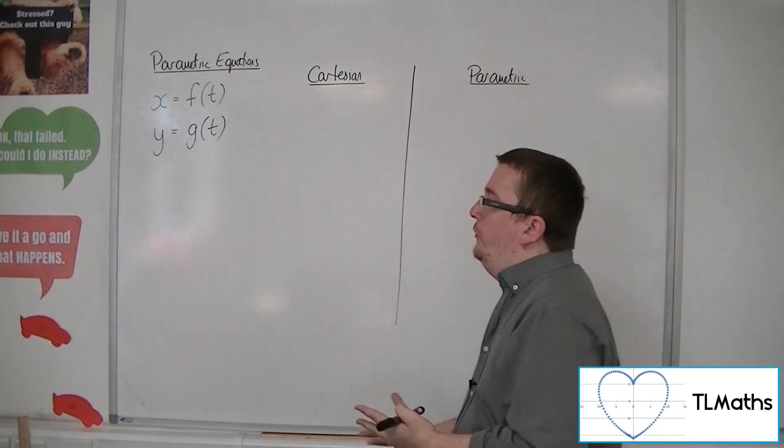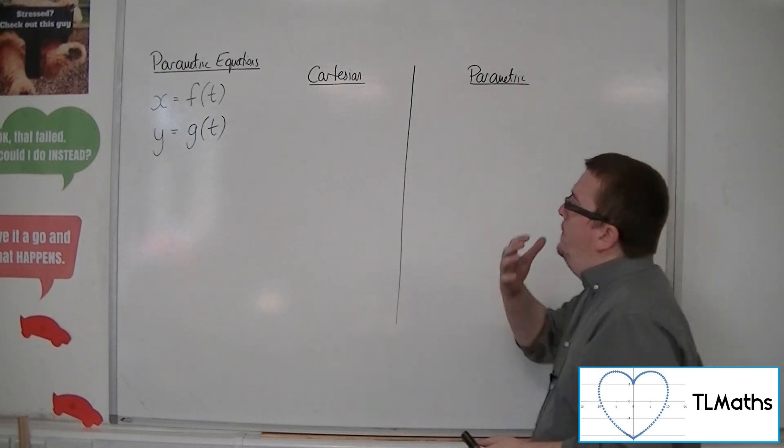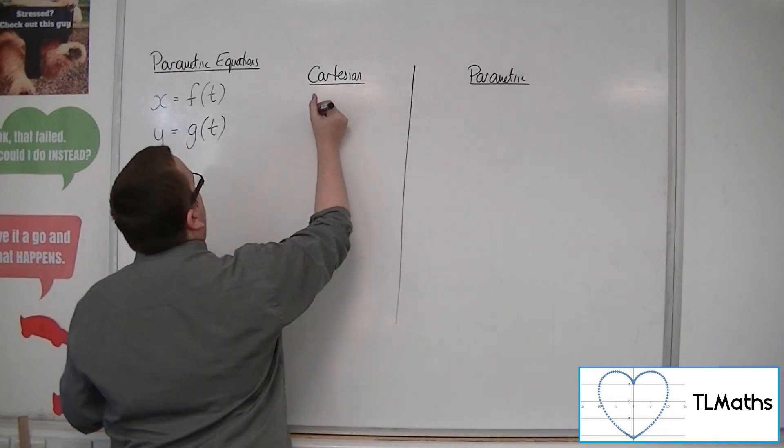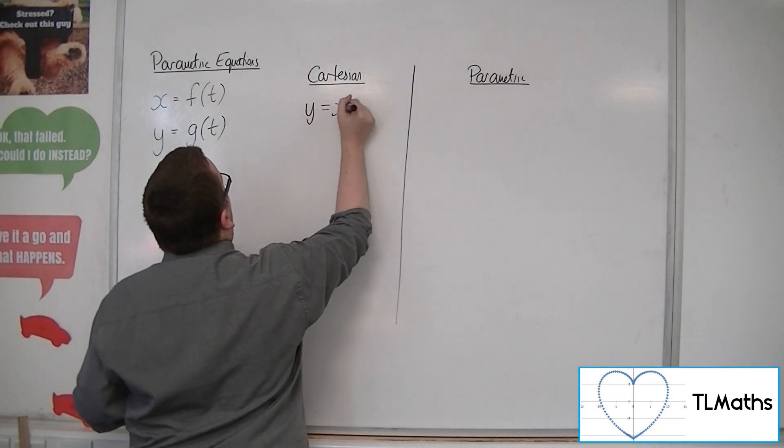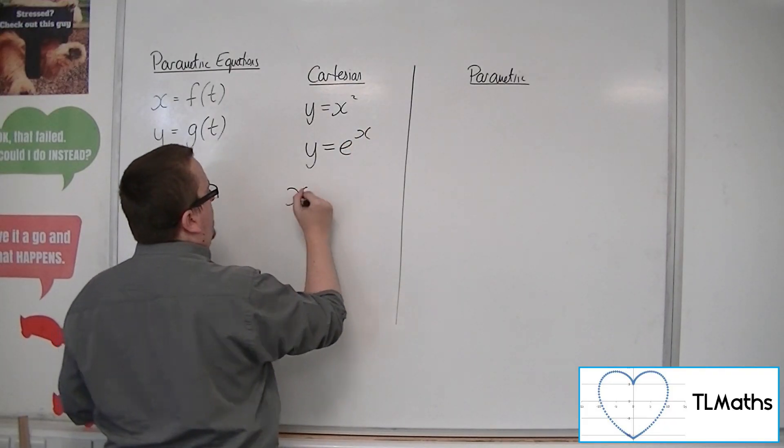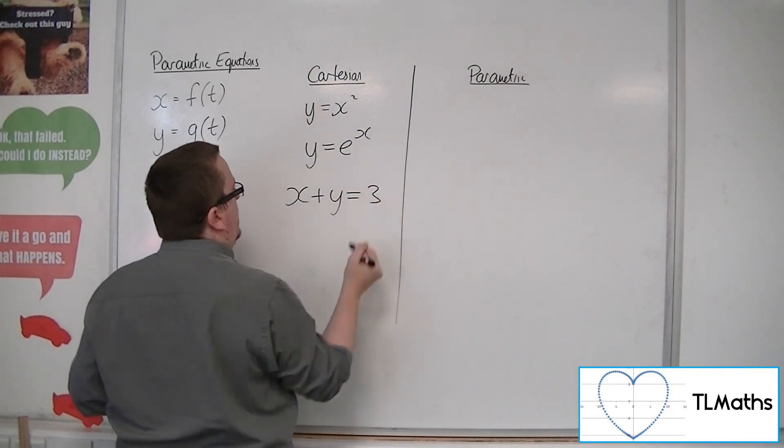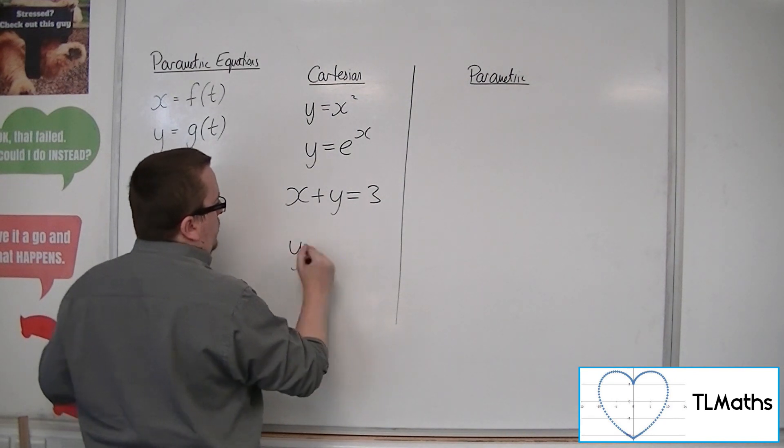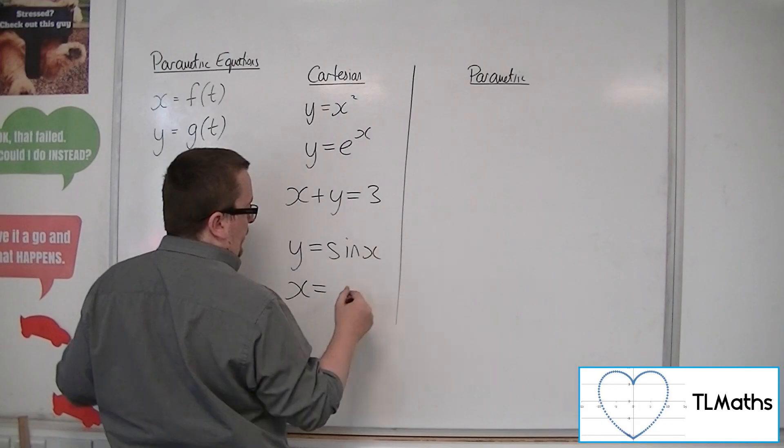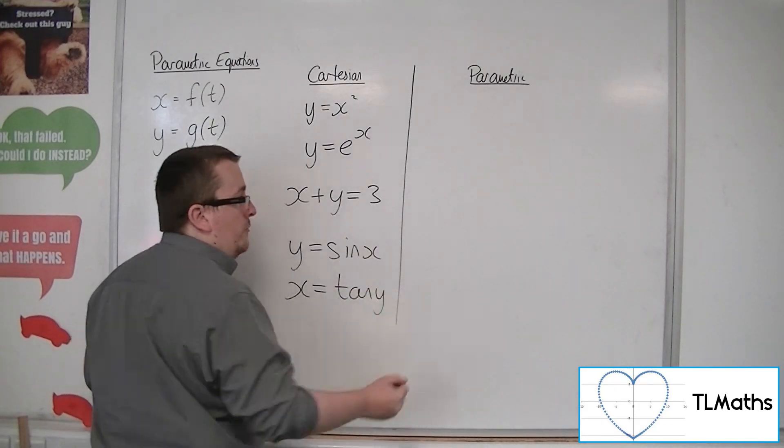So the ones you're really used to. When I'm talking about Cartesian equations, I'm thinking of things like y equals x squared, or y equals e to the x, or x plus y equals 3, or y equals sine x, or x equals tan y, for example.